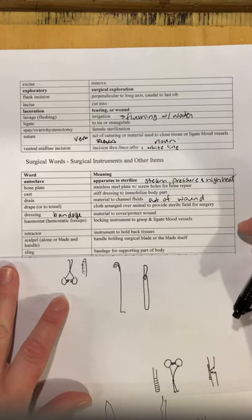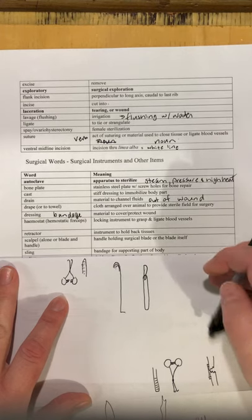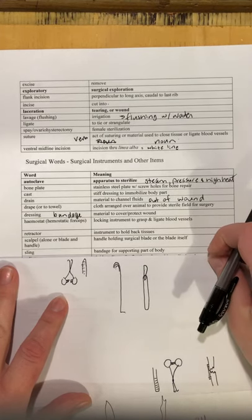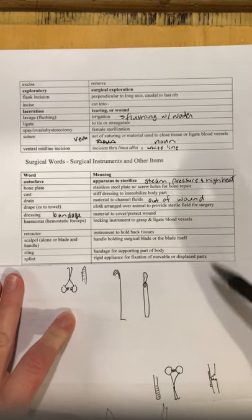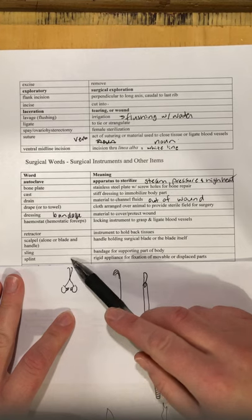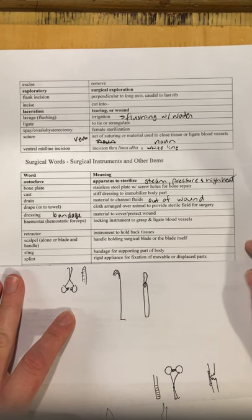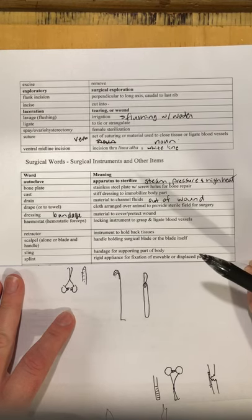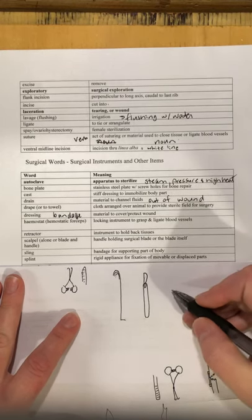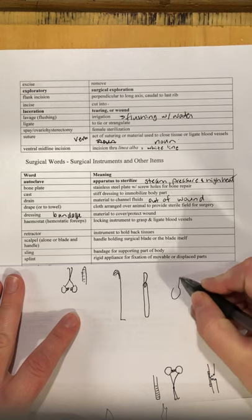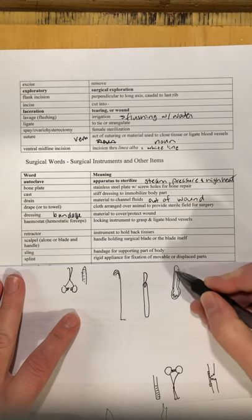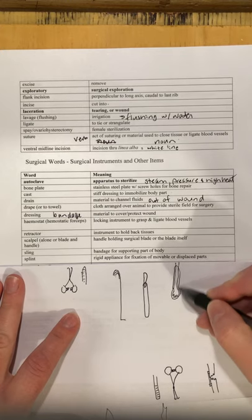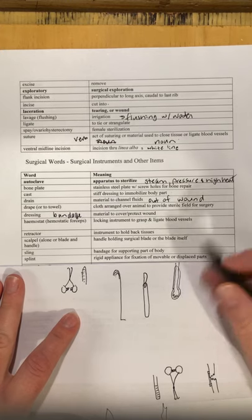A sling is a bandage for supporting part of the body — we often see humans wearing arm slings when their arm is broken. A splint is a rigid appliance for fixation of movable or displaced parts. For example, spoon splints look like a spoon — the paw rests here, the rest of the leg goes up, and that holds the leg straight so the bones can heal underneath.